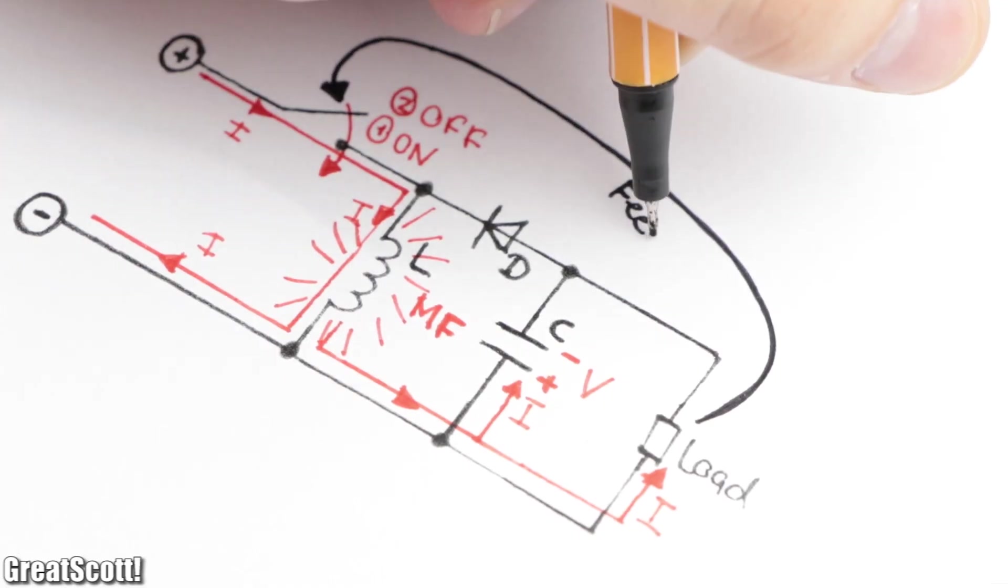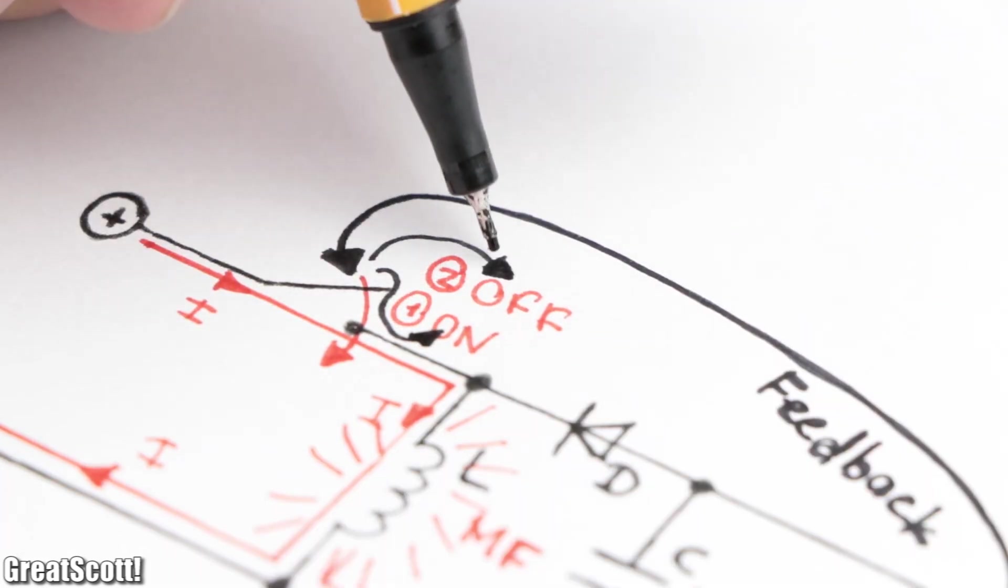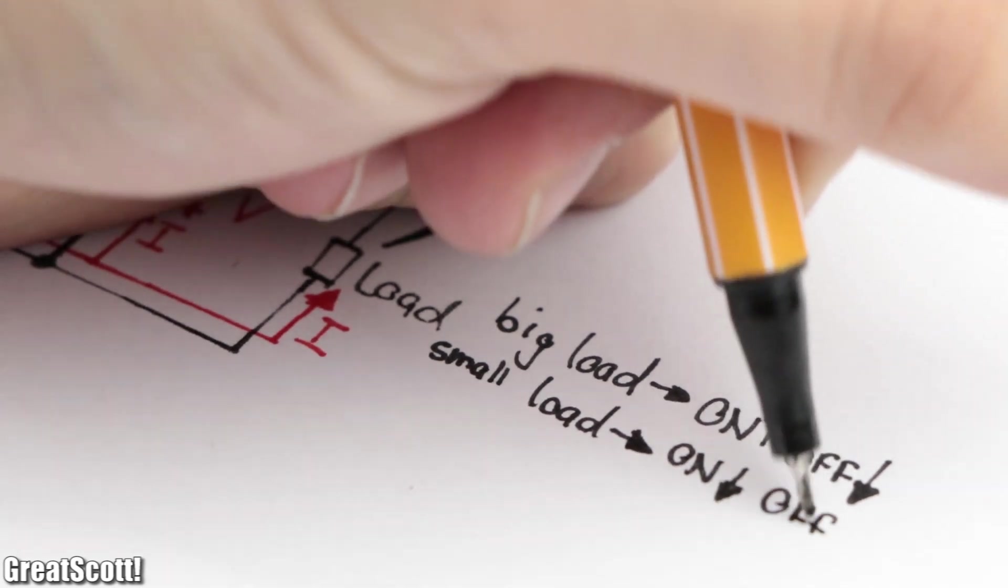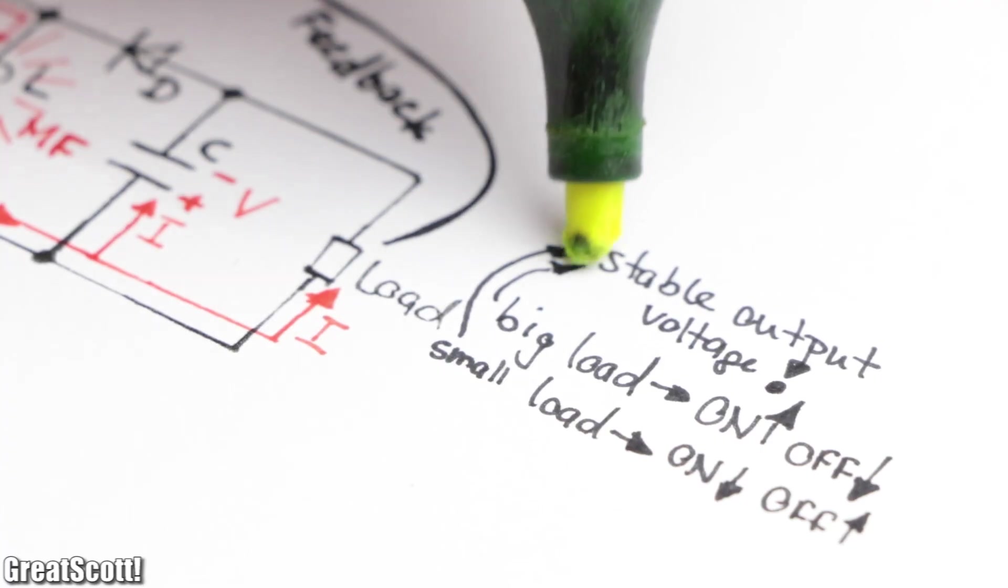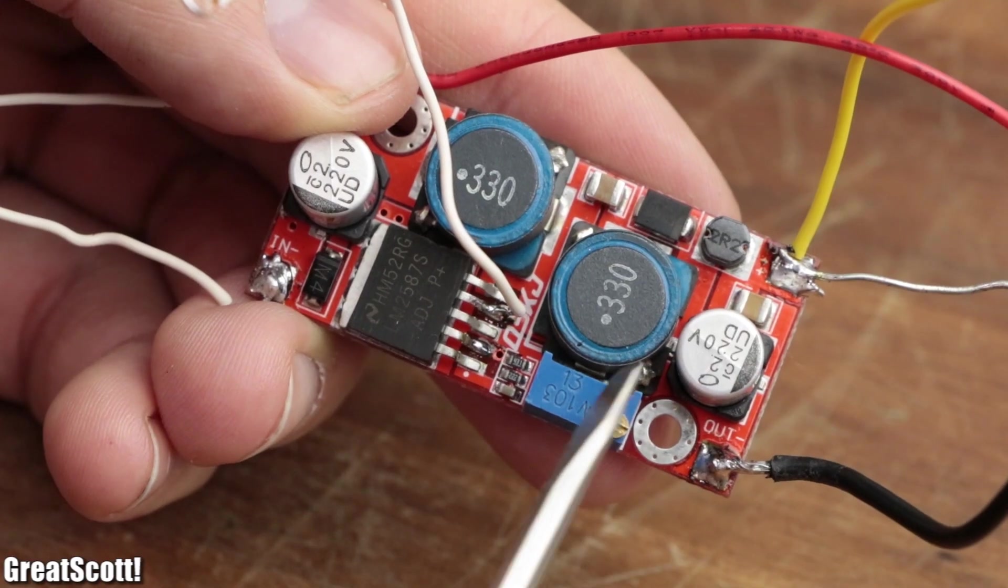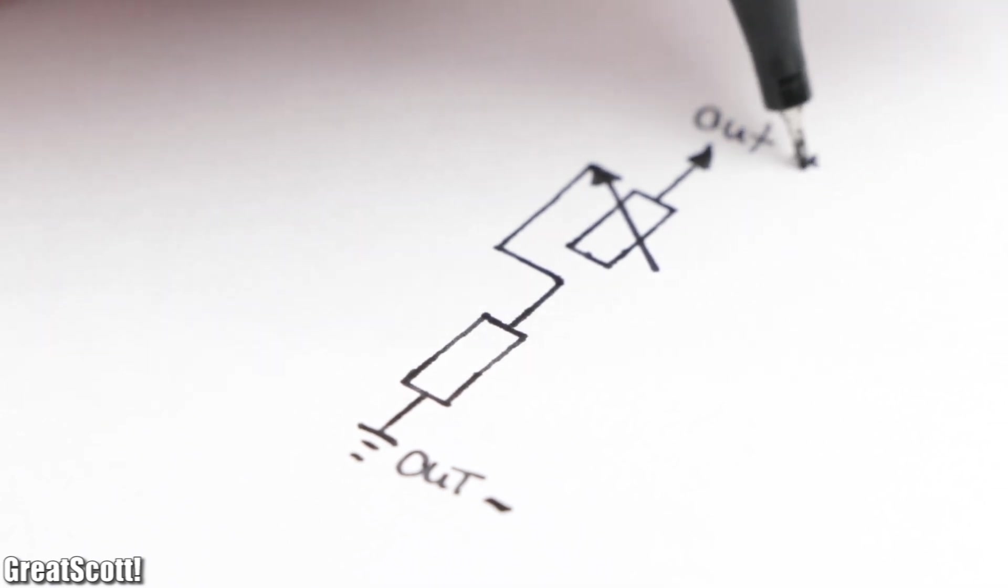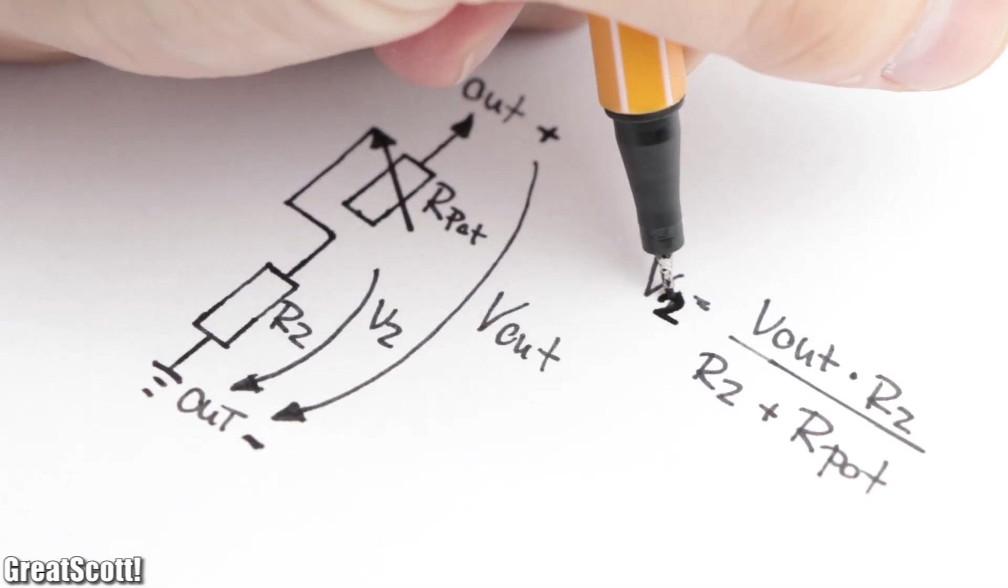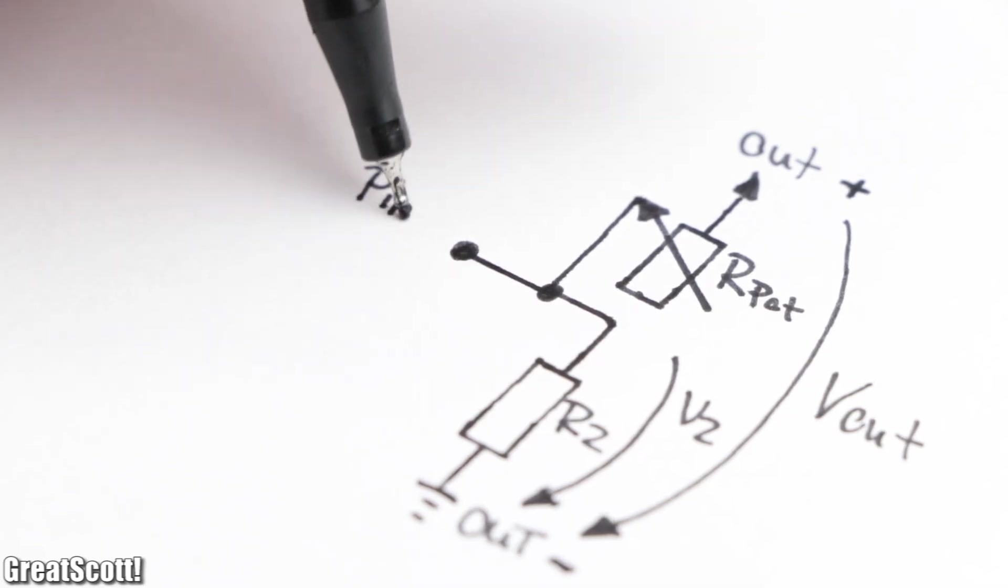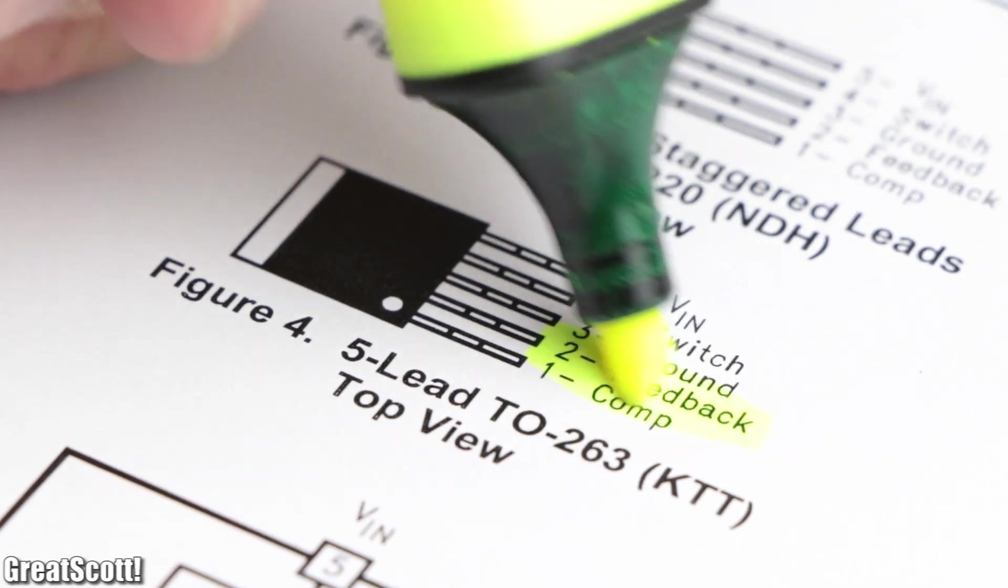So in conclusion that means there has to be a feedback system on the output which tells the IC to increase or decrease the on time of the switch dependent on what load is attached, so that the output voltage remains stable. In our case, a potentiometer and resistor are connected in series between the output voltage and ground, and thus builds up a voltage divider. This divided voltage potential then directly connects to pin 2 of the IC, which is the so called feedback pin.